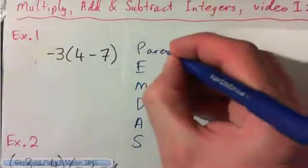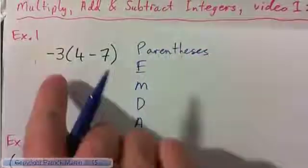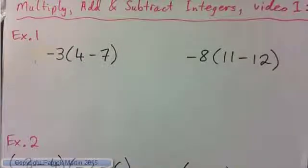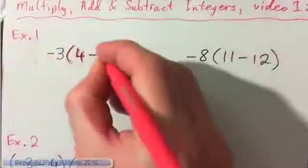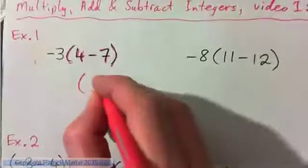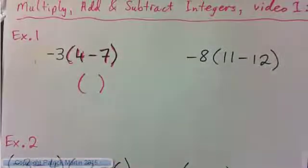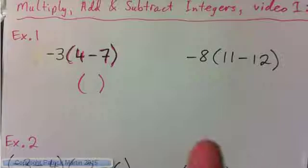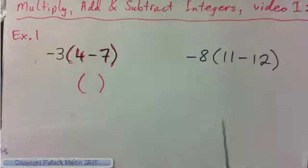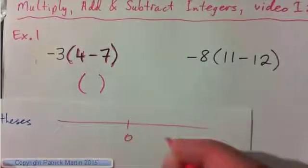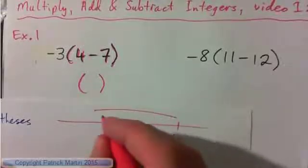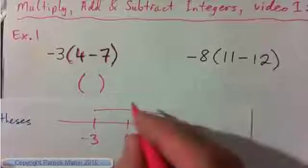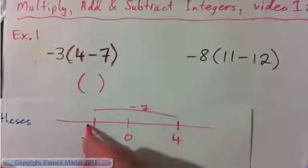We've got to do parenthesis first. Inside the parenthesis we have four minus seven. You can think about subtracting — you have four dollars, you subtract seven, and you're in debt. Or think about the number line: you're at four, you go back seven, you end up at negative three.